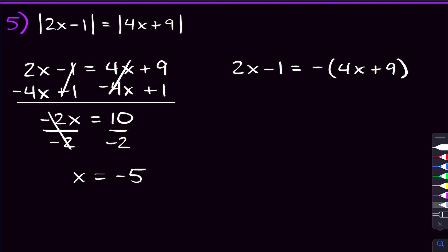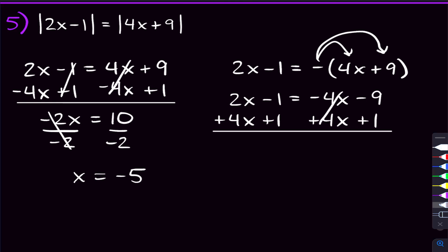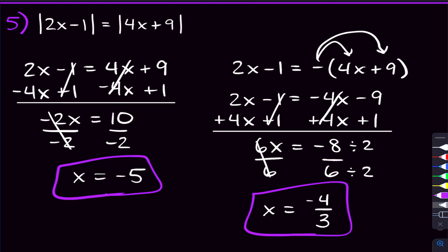For the right equation, distribute the negative to get 2x minus 1 equals negative 4x minus 9. Add 4x and add 1 on both sides: 6x on the left, negative 9 plus 1 equals negative 8 on the right. Dividing by 6 gives x equals negative 8 over 6, which simplifies to negative 4 over 3. Those are our two solutions for this problem.